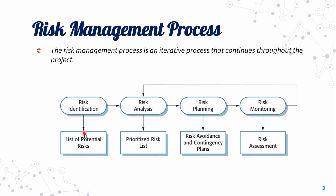We have a list of potential risk factors — this is the risk analysis, producing a prioritized risk list. We then have a list of priorities, followed by risk awareness and contingency plans. So let's identify risk planning.